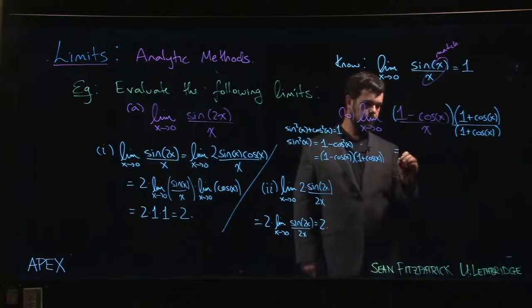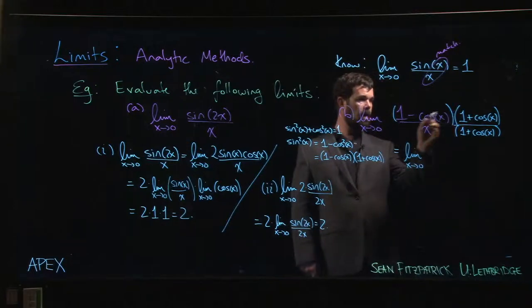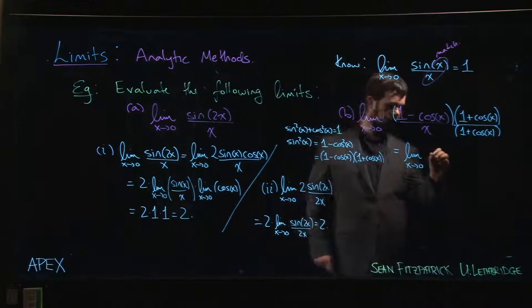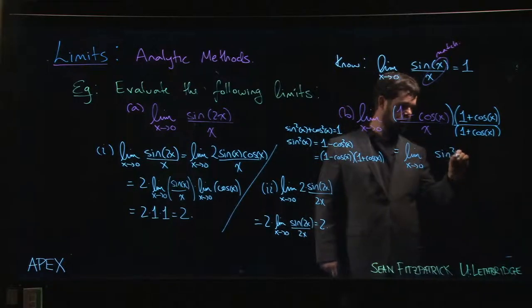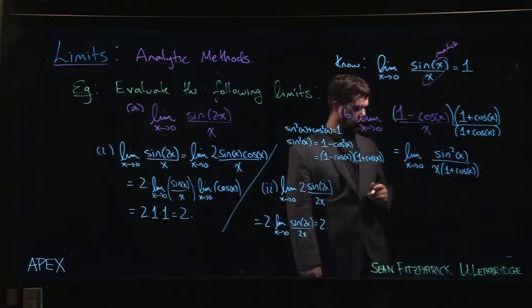So now what I have is the limit, x going to 0. So this 1 minus cos x times 1 plus cos x, we just saw that that's sine squared x. And on the bottom we have x times 1 plus cos x.